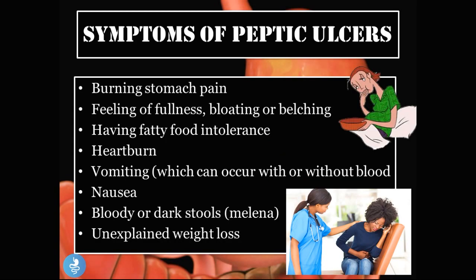Now let's talk about some symptoms of peptic ulcers. The patient may experience a burning stomach pain, feeling of fullness, bloating or belching, fatty food intolerance, heartburn, vomiting which can occur with or without blood — if they vomit with blood it's called hematemesis — nausea, bloody or dark stools which is called melena, and unexplained weight loss.